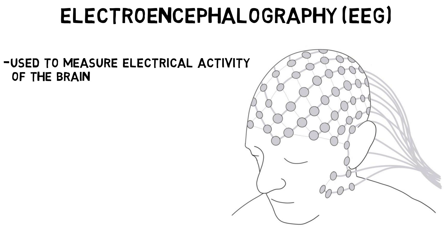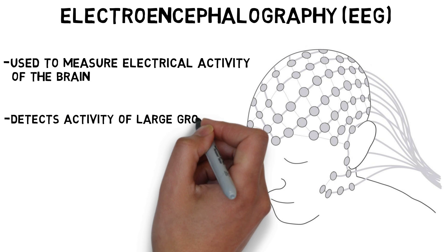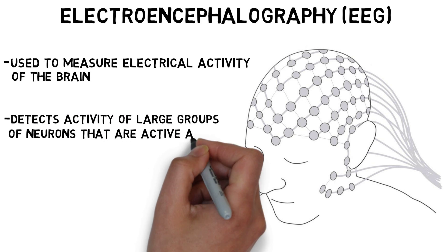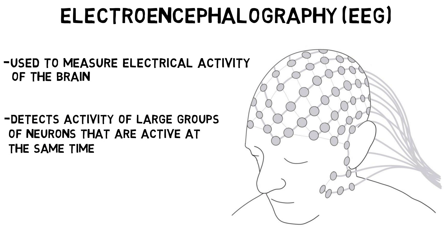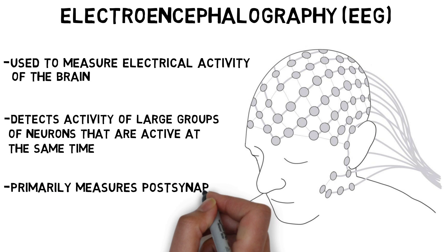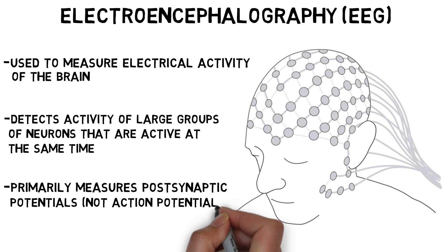Typically, EEG does not record the activity of single neurons, but rather detects the signals created when populations of neurons are active at the same time. It mostly records signals from small areas of the brain surrounding each electrode. EEG is primarily measuring postsynaptic potentials, or changes in membrane potential that are elicited by neurotransmitters binding to receptors on the postsynaptic membrane.